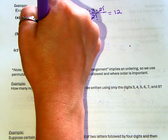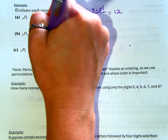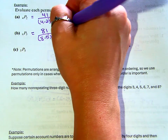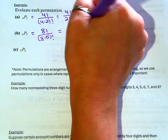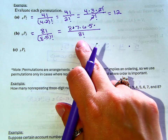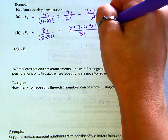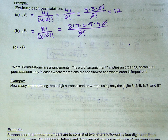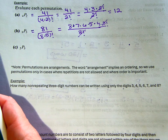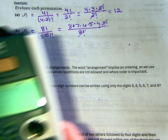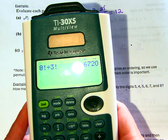For 8P5 — eight factorial over (eight minus five) factorial — on top we write eight times seven times six times five times four, and the bottom is three factorial. For larger numbers it gets tedious to do by hand. On the calculator: eight, PROB, nPr, five, enter — you get 6720. The calculator does those computations for you.